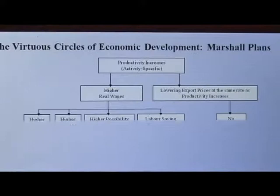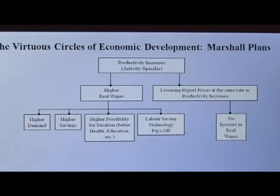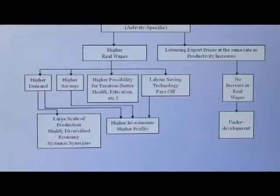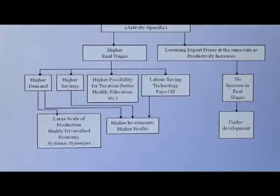The really virtuous circles start when you create higher demand, higher savings, higher possibility for taxation, better health education, and labour-saving technology pays off. Then a large scale of production produces a highly diversified economy and systemic synergies, high investments and higher profits. If the fruits of technical change do not produce any increase in real wages, you have underdevelopment. Development is an exercise in imperfect Schumpeterian dynamic competition.